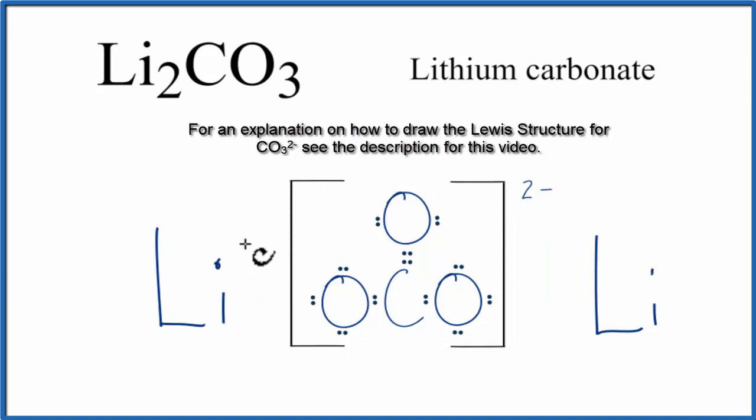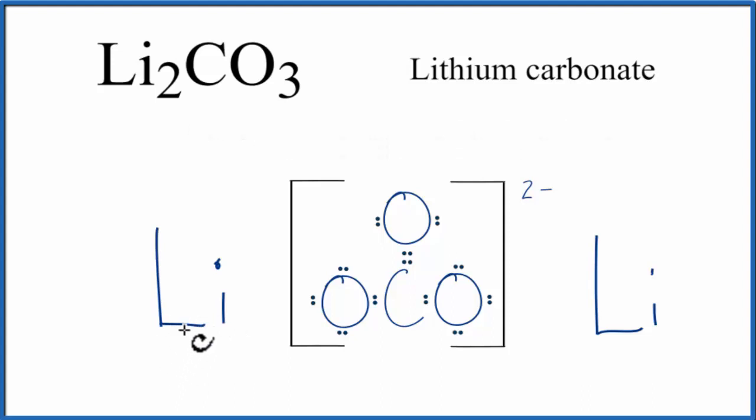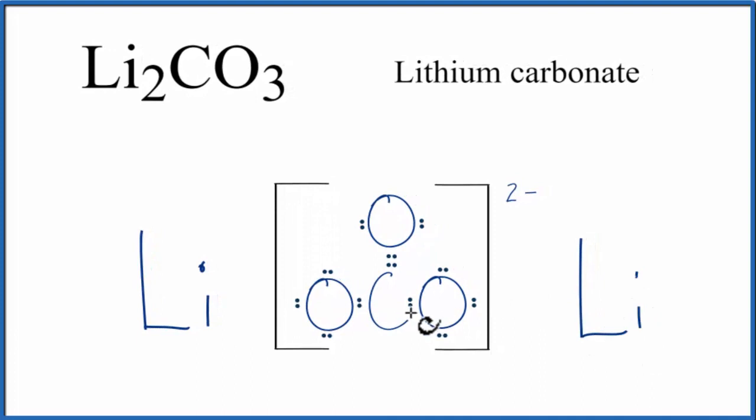If we go to the periodic table, we can see lithium is in group 1, so it has one valence electron, and it transfers that valence electron to this CO3 here. This lithium also has one valence electron, it transfers it.